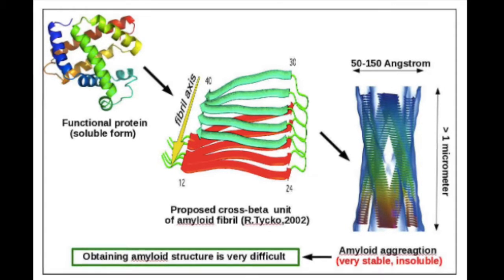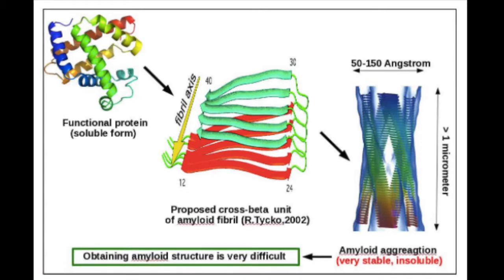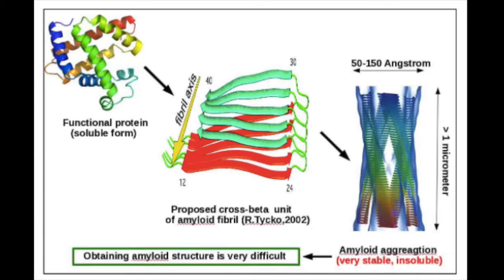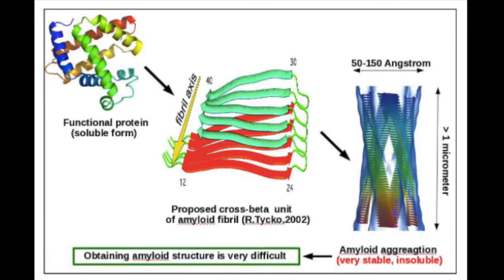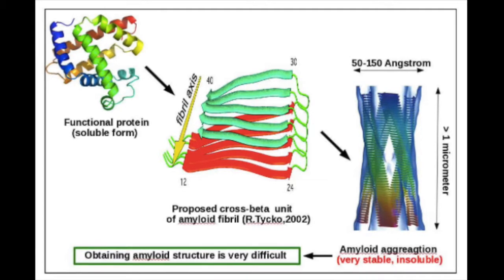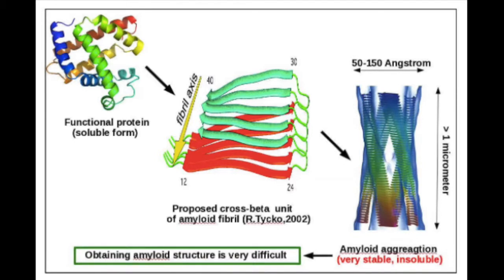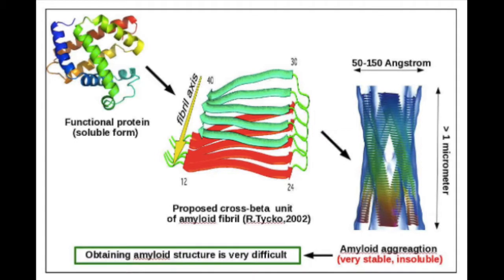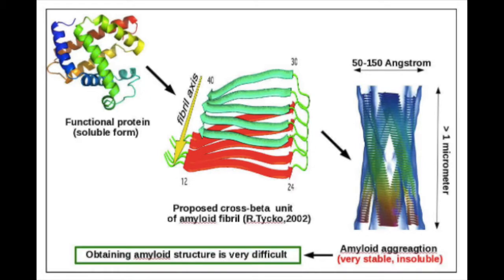IAPP amyloid fibrils are made up of two symmetrically related columns of IAPP monomers. The monomers within each pack on top of each other to generate a U-shaped structure with beta sheet hydrogen bonds between adjacent IAPP molecules.